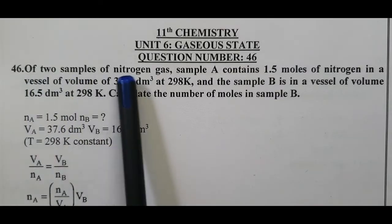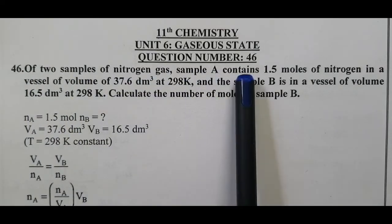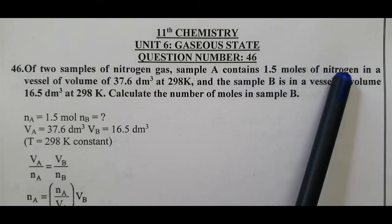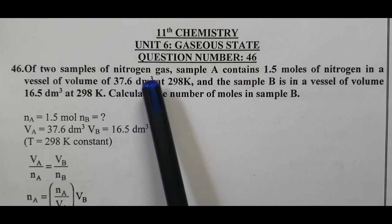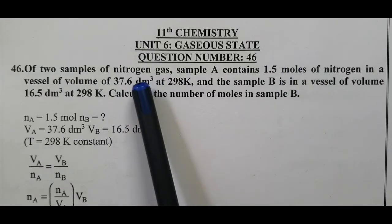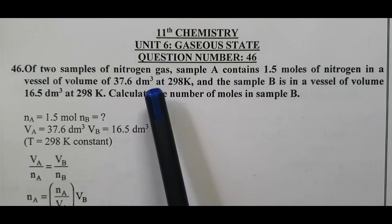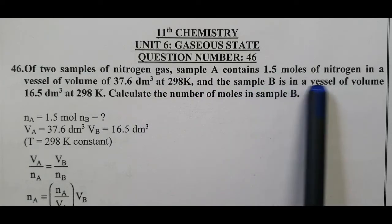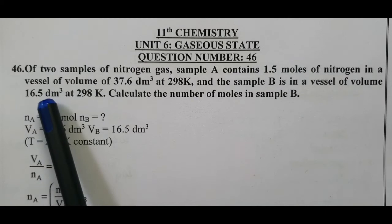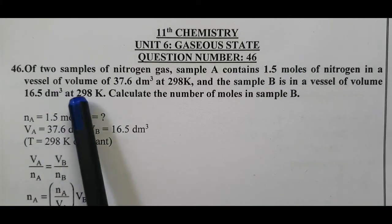Of two samples of nitrogen gas, sample A contains 1.5 moles of nitrogen in a vessel of volume 37.6 decimeter cube. Number of moles, volume is given, Avogadro hypothesis, at 298 Kelvin. And the sample B is in a vessel of volume 16.5 decimeter cube at 298 Kelvin.